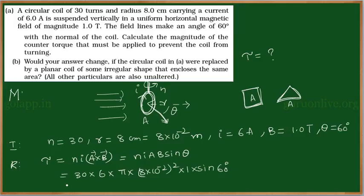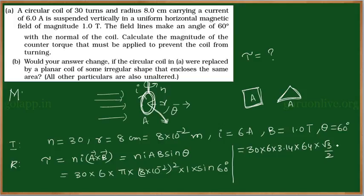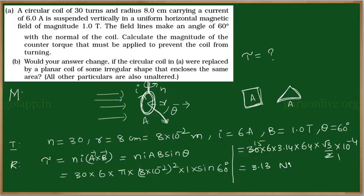So we will get 30 into 6 into 3.14 into 64 into root 3 by 2 into 10 to the power of minus 4. So finally you will get 3.13 newton meter. This is the torque acting on that coil.